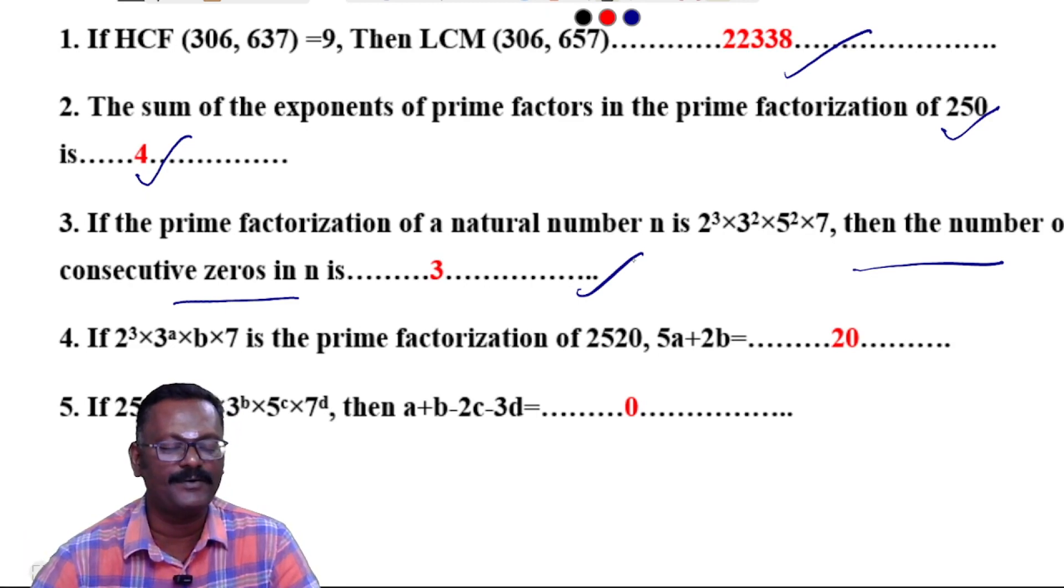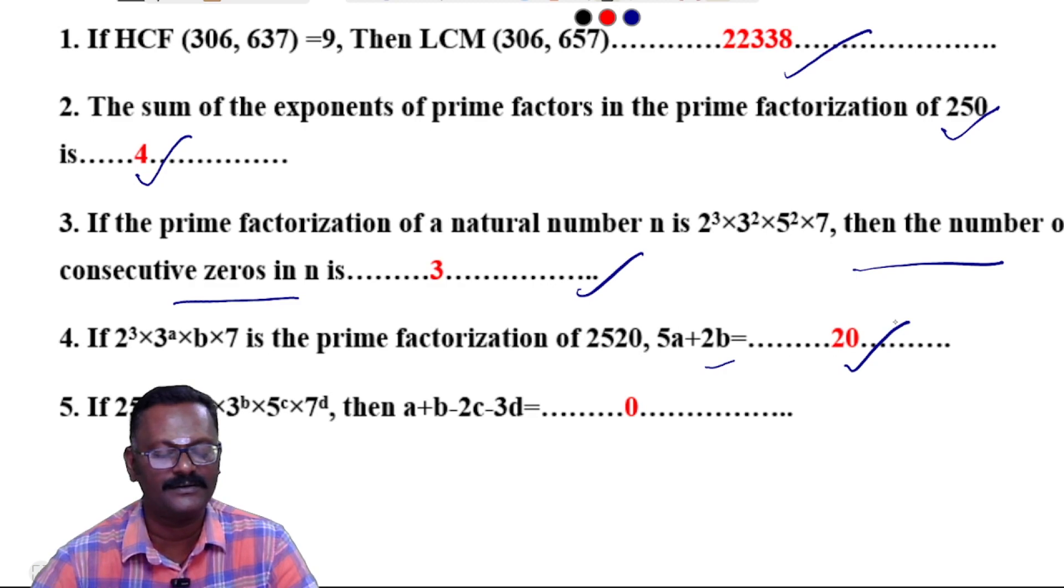Question 4: If 2520 = 2^a × 3^b × 5^c × 7^d is the prime factorization of 2520, then a + b - 2c - 3d equals 0.